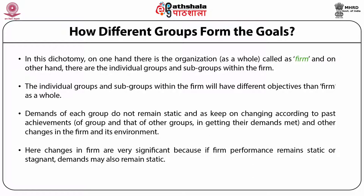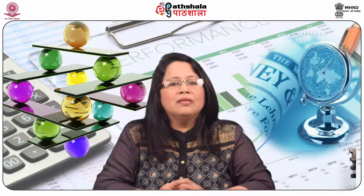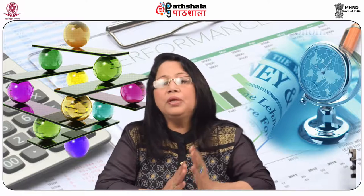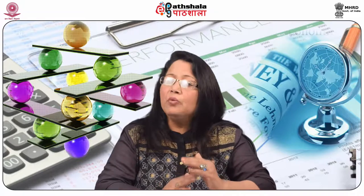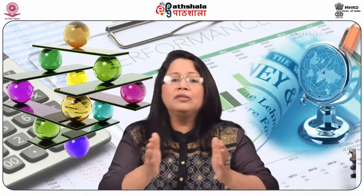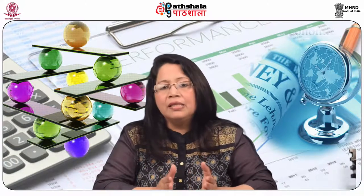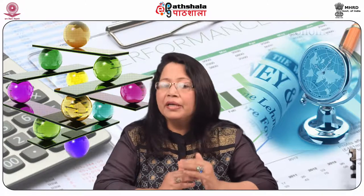Changes in firm performance are very significant because if firm performance remains static or stagnant, demands may also remain static. The fourth aspect is the role of time lag — the lag between past achievements and future aspirations. According to Cyert and March, this time lag can be used by the firm to generate and accumulate surplus, which eventually can be used for conflict resolution, as the demands of various groups and subgroups may be in continuous conflict with each other.